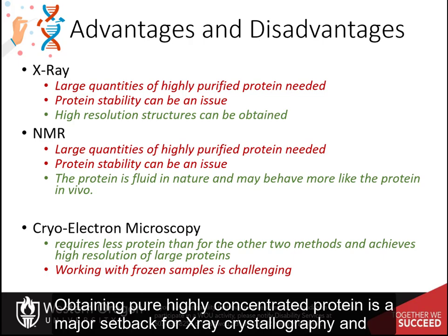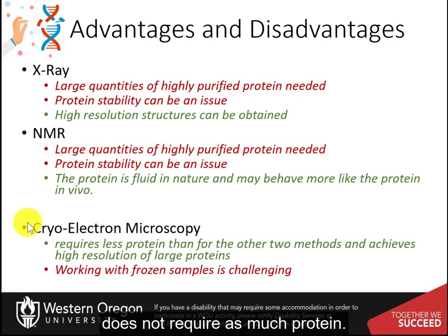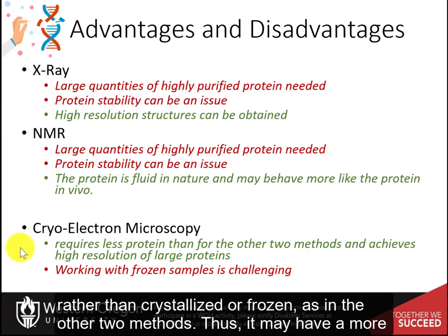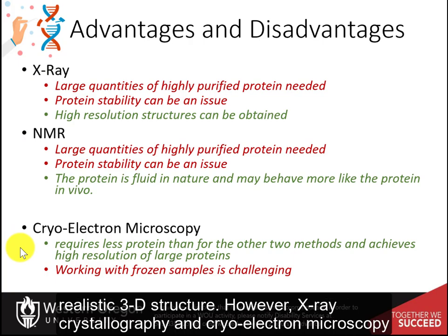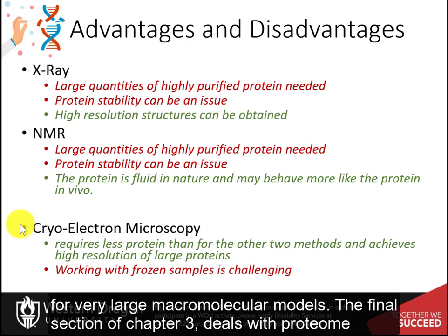Obtaining pure, highly concentrated protein is a major setback for x-ray crystallography and NMR spectroscopy, whereas cryo-electron microscopy does not require as much protein. NMR has some advantages as the protein remains in a fluid system, rather than crystallized or frozen as in the other two methods, and thus may yield a more realistic 3D structure. However, x-ray crystallography and cryo-electron microscopy can produce really high-resolution images, and cryo-electron microscopy can yield structures for very large macromolecular models.